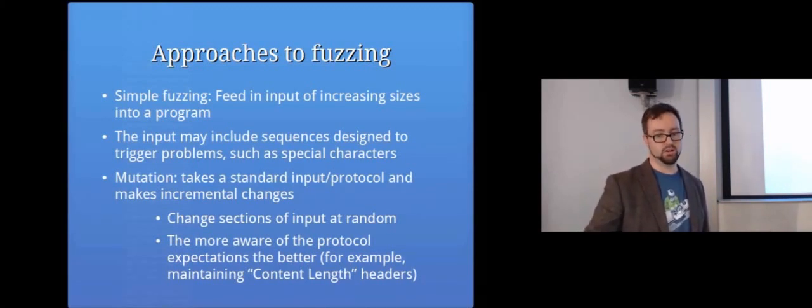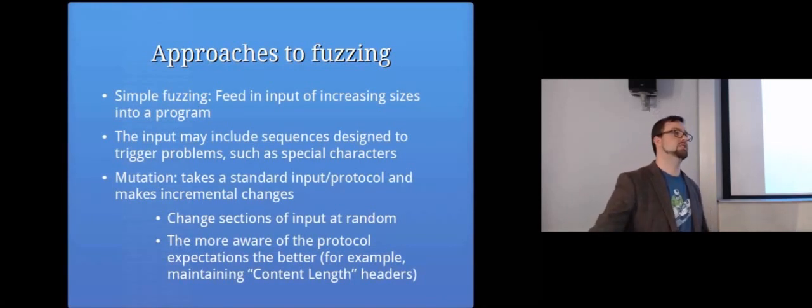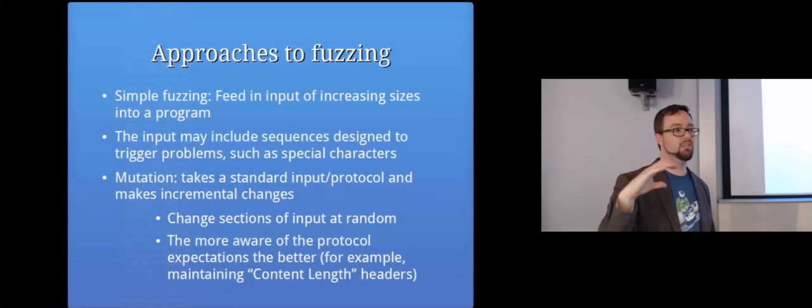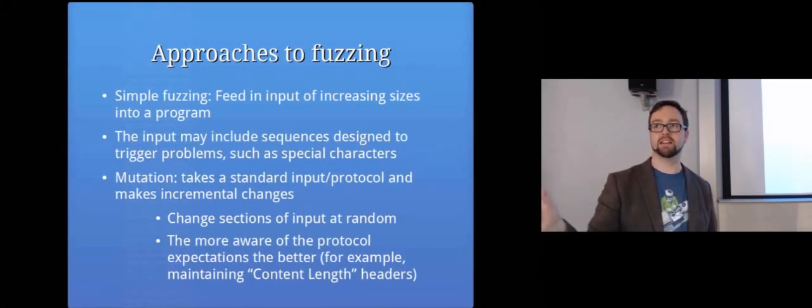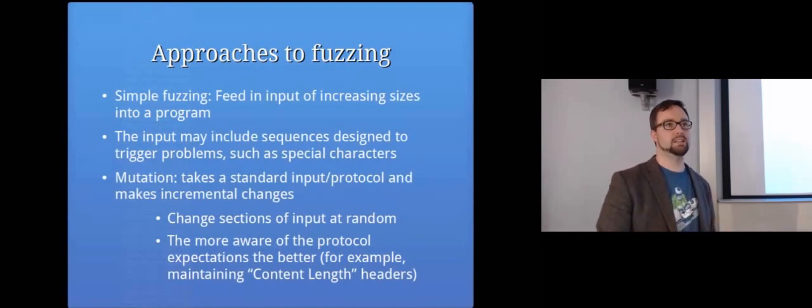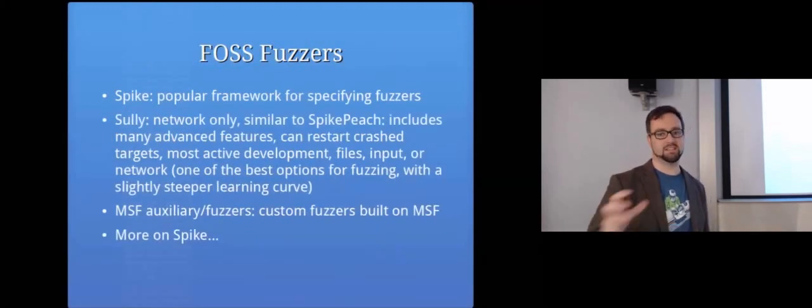The more aware of the protocol expectations, so the more aware the fuzzer is of what the program at the other end is expecting, the better, basically. The more likely we're going to find something. So for example, with HTML, in the header of the HTML is a content length. And if we change the content without changing that header value of the content length, the server might just stop listening to us halfway through our request if we haven't set that correctly. So we need to be fairly clever. The fuzzer needs to take what the other program is expecting into account and not just pipe in a bunch of random stuff. It needs to be random, but also try and test the different parts of the software.